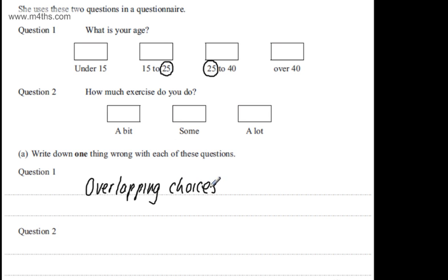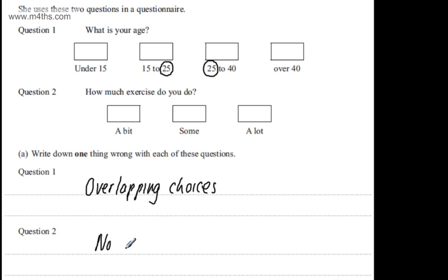Looking at question 2, there's no time frame — it's not asking how much exercise you do on average in a week. Also, the answers are very vague or subjective; 'some' to one person might be completely different to another. So we can write no time frame, or alternatively that these are very vague or subjective choices. That's part A done for two marks.